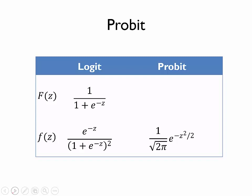It's going to turn out to have different functions, capital F of z and lowercase f of z, but they will have somewhat similar shapes overall. So we just noted that lowercase f of z in the logit function in the lower left part of this table looked a little bit like a bell-shaped curve. More technically, a bell-shaped curve is the normal probability distribution, and the normal probability distribution has this formula that I've just added to the lower right corner of the table.